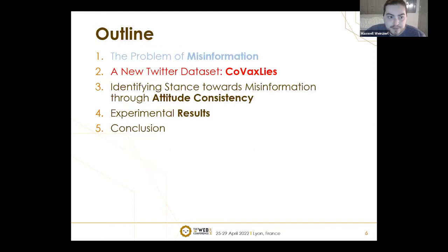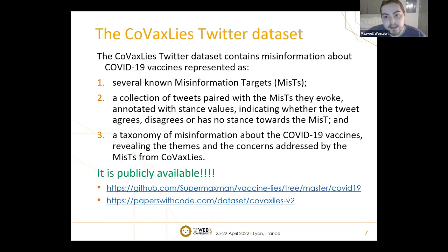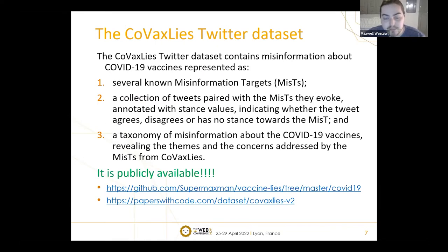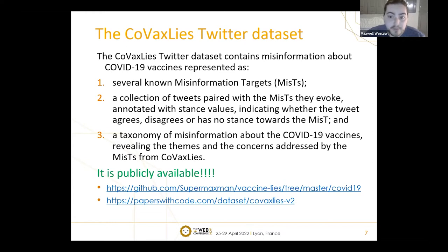FEMA and other datasets are great for identifying misinformation from scratch. But from a public health perspective, if we already know certain misinformation topics people are discussing, the question becomes: how do we find instances on Twitter and identify stances? Towards that goal, we built the COVAX Lies Twitter dataset — a decently sized, few-thousand-tweet dataset of known misinformation targets identified through public health officials or a question-answering approach described in the paper.